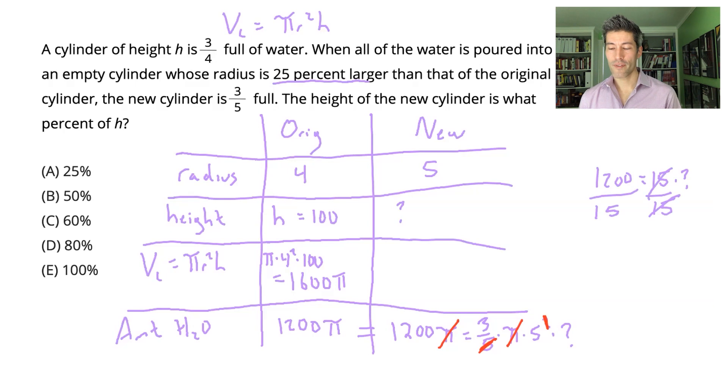Hmm, 1200 divided by 15 might be a little tougher to think about, but 120 divided by 15 will give me 8. So 1200 divided by 15 should give me 80. The new height is 80, and 80 is 80% of our starting height, 100. The answer to this problem is D.